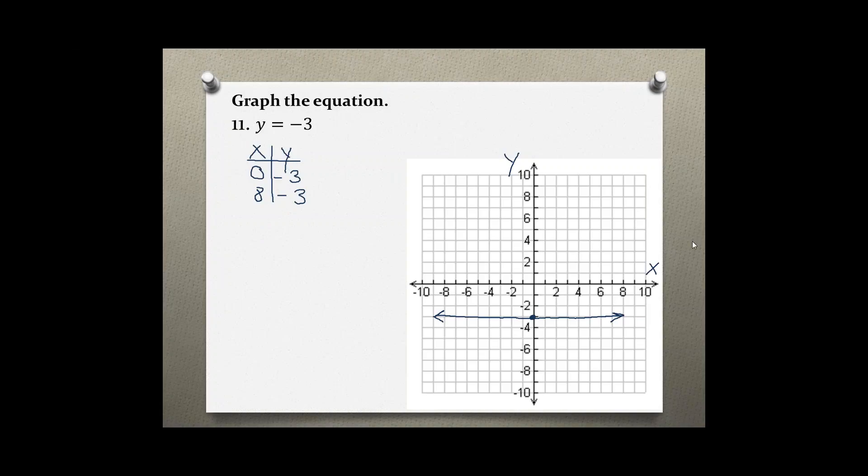So graphing our first point, 0 comma negative 3, would be right here, which we already have, and 8 comma negative 3 is right here. As you notice, this is the exact same line. So there are two different ways—some of you might get the first one, and some of you might need a little bit more help by coming up with the table of values.